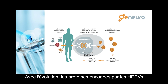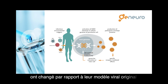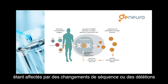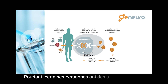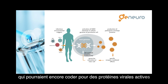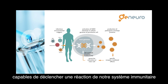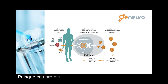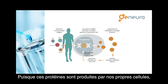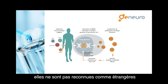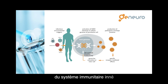The proteins encoded by HERVs have generally changed through evolution from their original viral template, affected by sequence changes and deletions over time. But some individuals have HERV sequences that may still encode for active viral proteins, which will trigger a reaction from our immune system. As they are encoded by our own cells, they are not recognized as foreign but still provoke a response — an innate immune response.